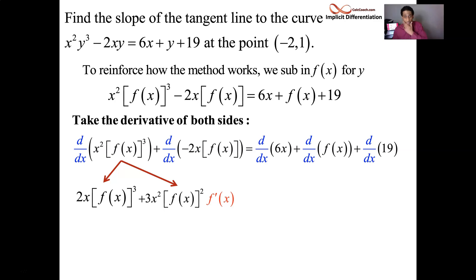Now we move to the second term, which is also a product rule. Take the negative as being part of the 2x, the first function, and then the f of x is the second function. Derivative of the first, negative 2, times the second, plus the first, negative 2x, times the derivative of the second, and f's derivative is just symbolically f prime.